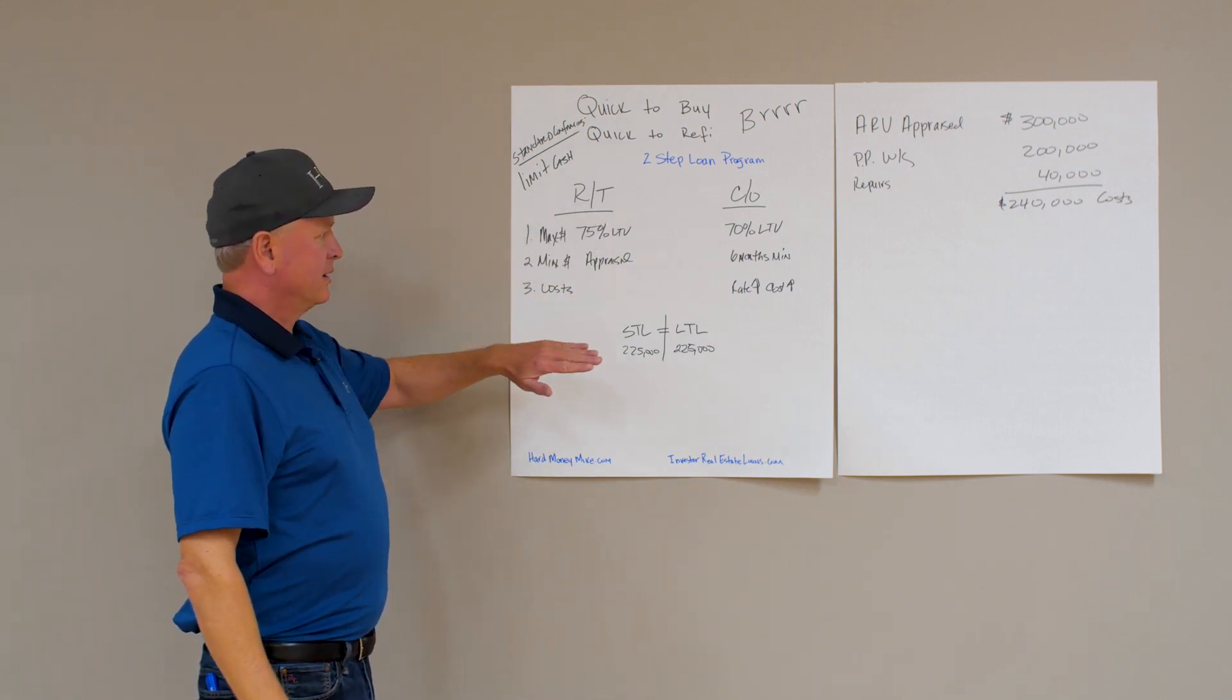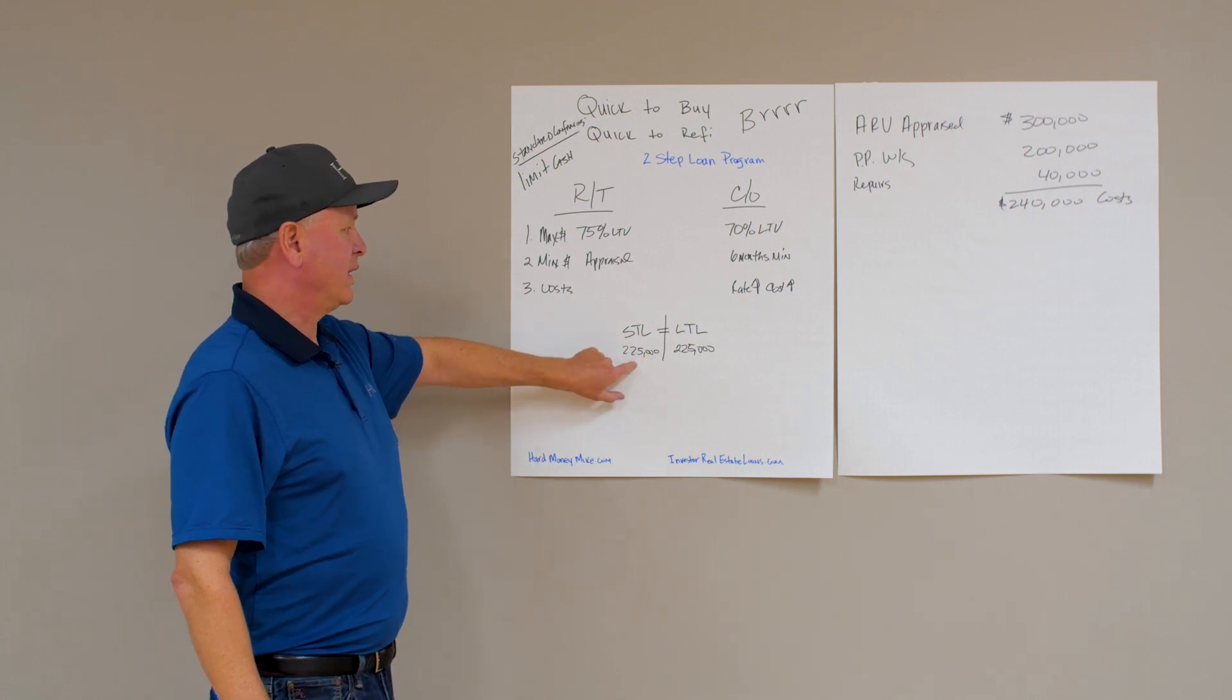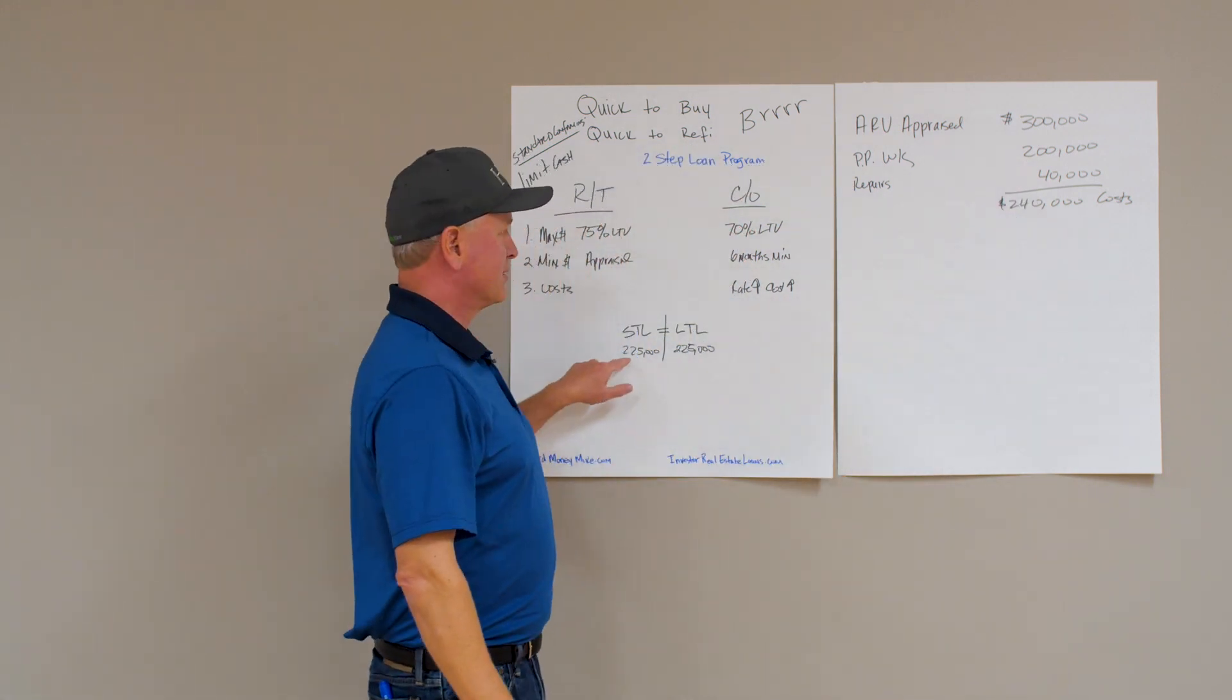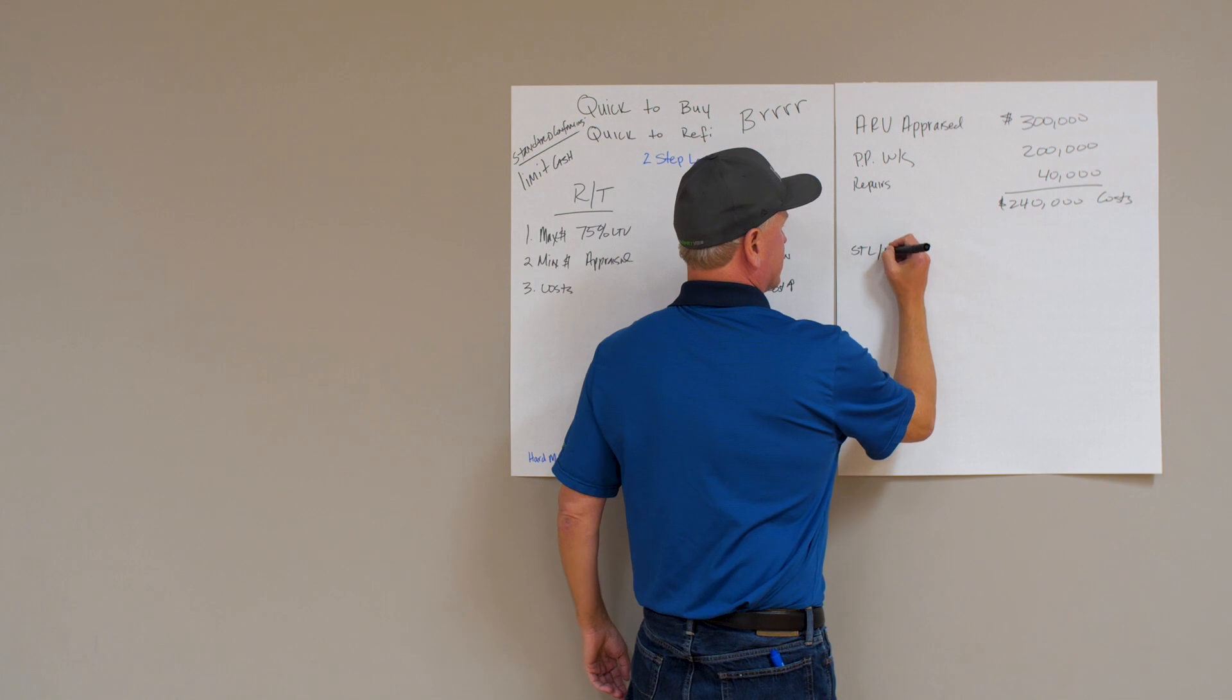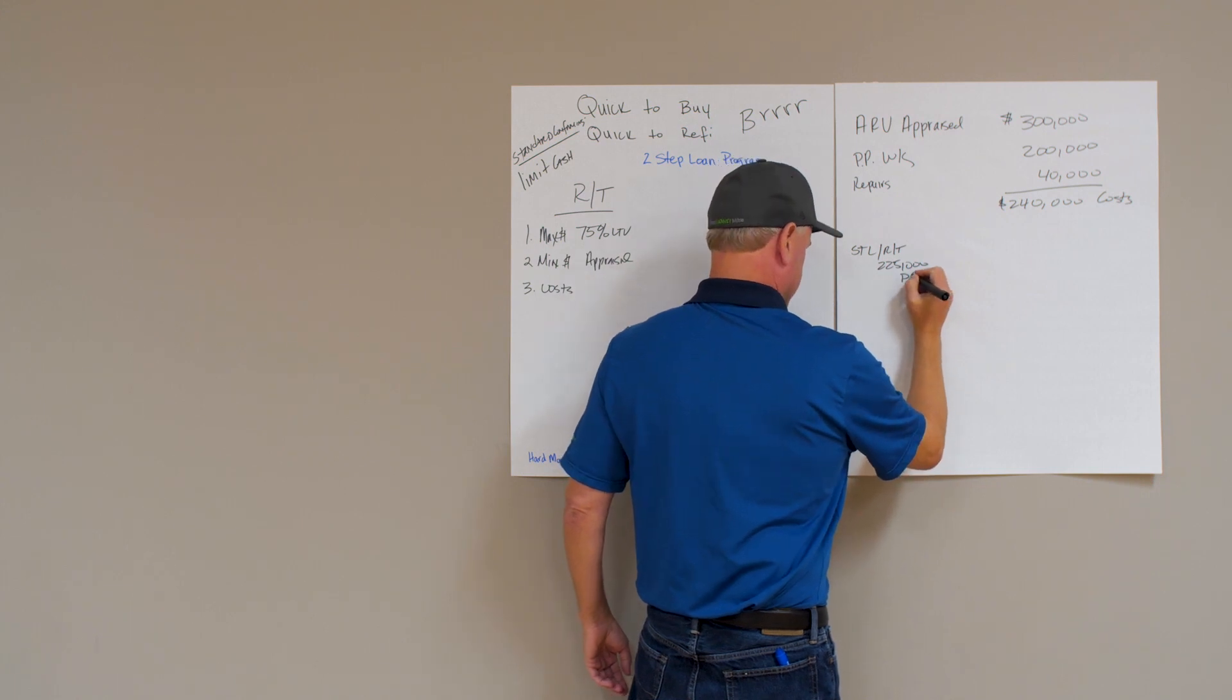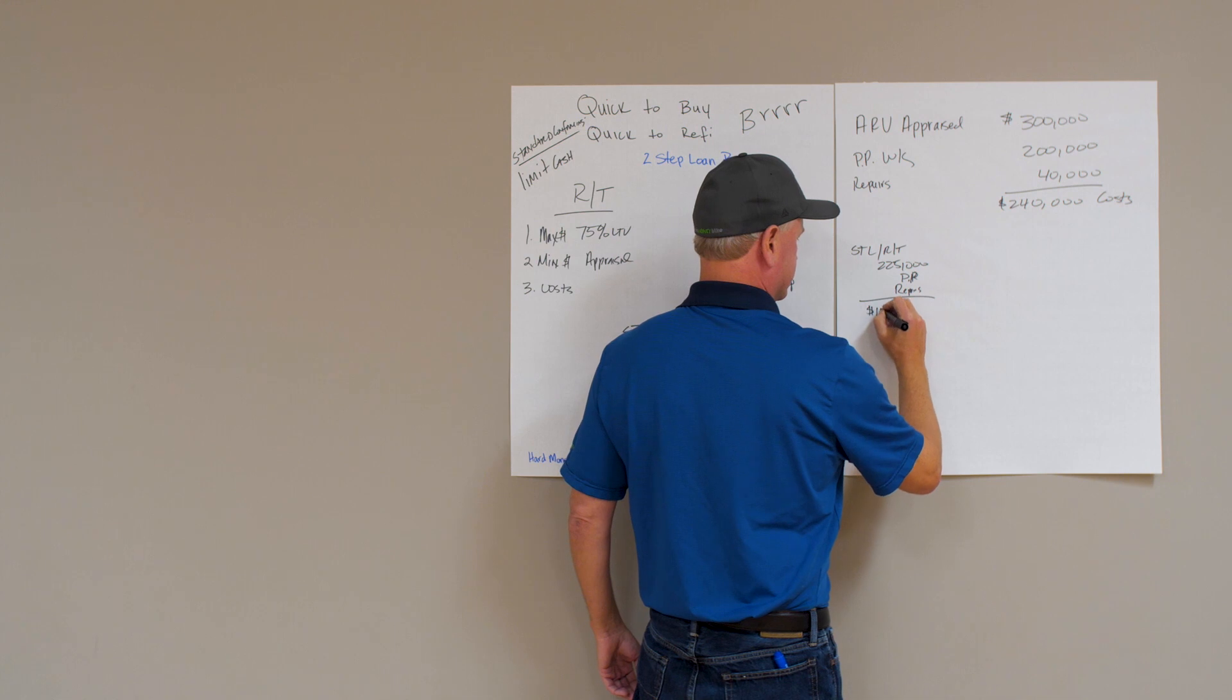So what would the difference look like between rate and term and cash out? If we properly set up this loan as a rate and term, and we know that we could do a loan for $225,000, we as a short-term lender would not only cover part of your purchase price but also cover part of your repairs. In this loan we would do a short-term loan for rate and term up to $225,000, which includes all your purchase price and part of your repairs. In this case, you'd have $15,000 into it.